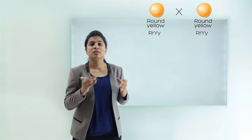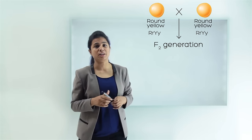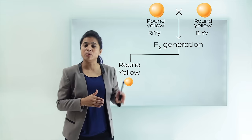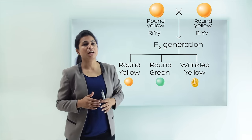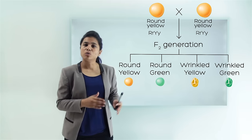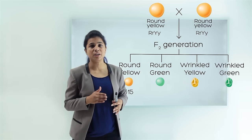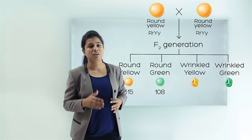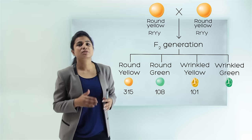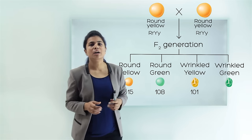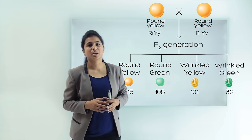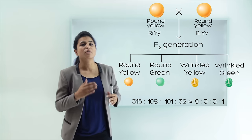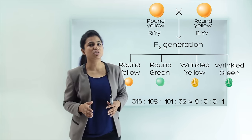Unlike the F1 generation, there were four different types of seeds with different combinations of shape and color in the second generation: round and yellow, round and green, wrinkled yellow, and wrinkled green. Out of 556 plants, 315 were round and yellow, 108 were round and green, 101 were wrinkled and yellow, and 32 were wrinkled and green. When he calculated the ratio, he got 9:3:3:1.